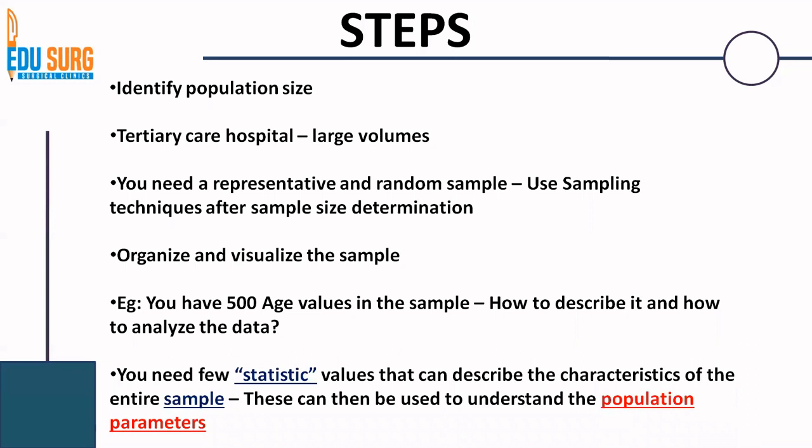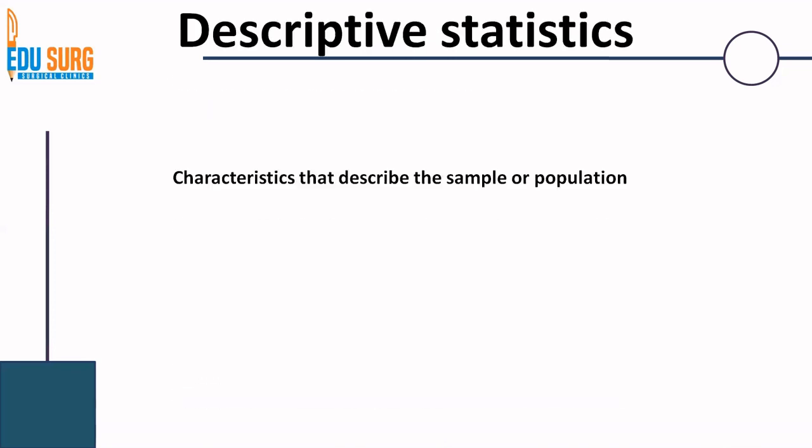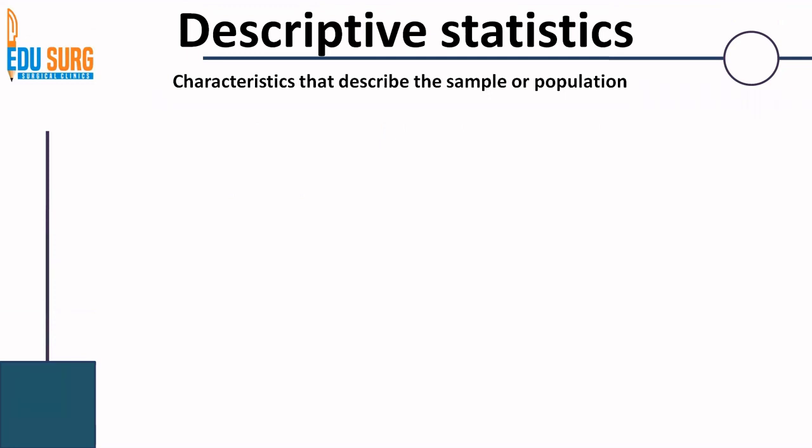For example, suppose out of your 500 values, 36 is the most common value. Then you know that your population parameter is also somewhere close to 36. We will see how to identify these specific characteristics of the sample so you can identify population parameters in a representative manner. This is basically descriptive statistics — a few values which can describe the entire sample and thereby make an inference about the entire population.